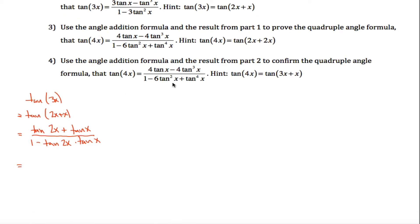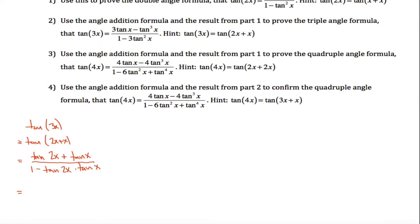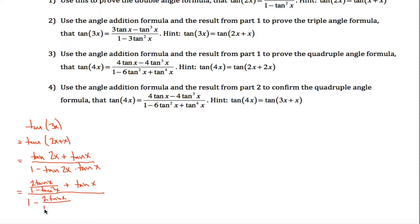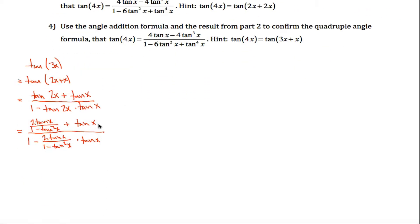So everywhere I see a tangent of 2x, I can replace it with 2 tangent of x divided by 1 minus tangent squared x — that's playing the role of tangent of 2x. To that I add tangent of x, and then divide by 1 minus tangent of 2x, where instead of writing tangent of 2x I write 2 tangent of x divided by 1 minus tangent squared x, and that gets multiplied by tangent of x. That gives this mess, but let's do some algebra to get where it's supposed to look.